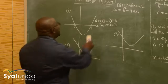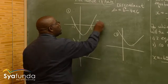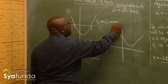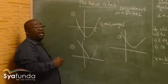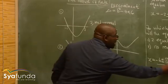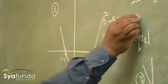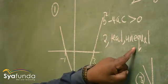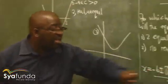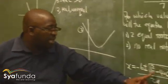There are two x-intercepts, so there are two roots. We write: there are two real, unequal roots. These roots are not the same, so they are unequal. Now, this relates to the discriminant: if b squared minus 4ac is greater than zero — that is, positive — you will always get two real and unequal roots. The discriminant tells you the type of roots you will get.